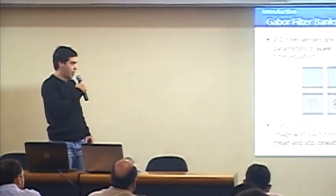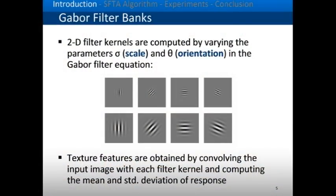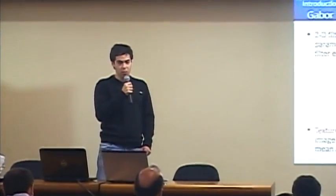Another well-known method for texture feature extraction is Gabor filter banks. To compute the feature vector, we generate a set of 2D filter kernels by varying the scale and orientation of a complex sinusoidal. The feature vector is then obtained by convolving the input image with all filter kernels and computing the mean energy response and standard deviation.